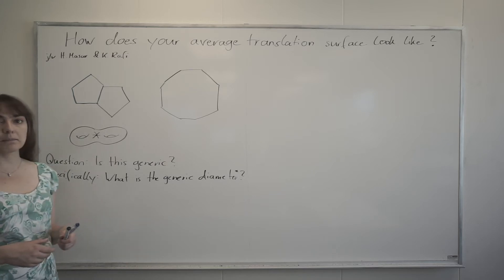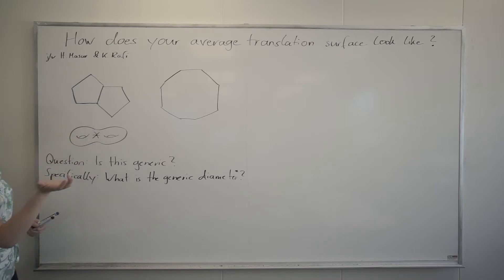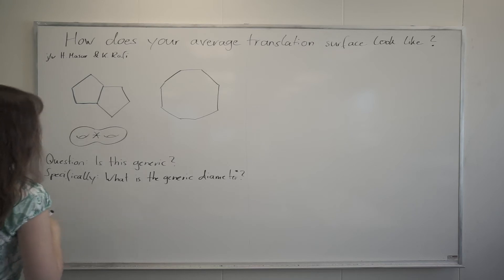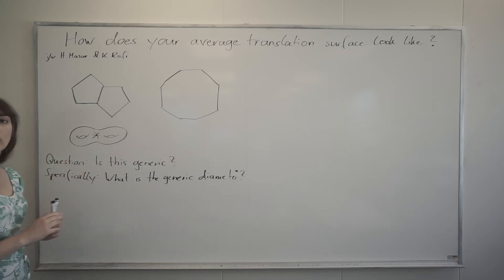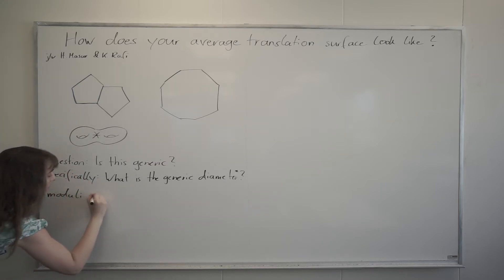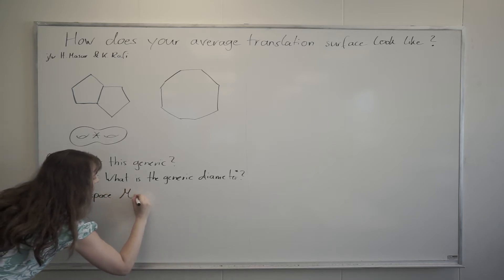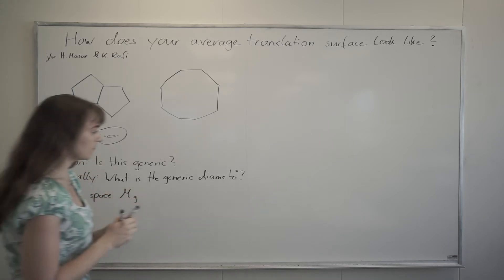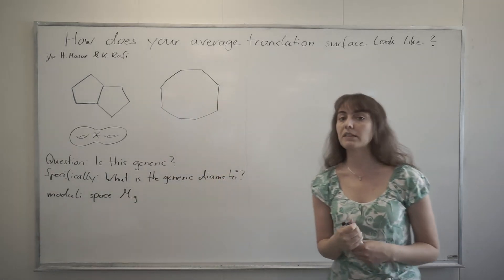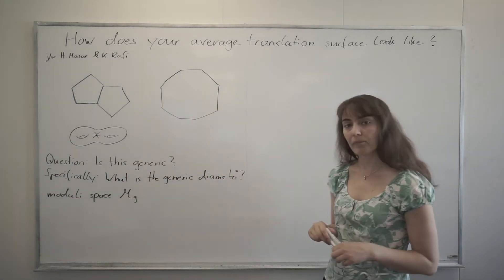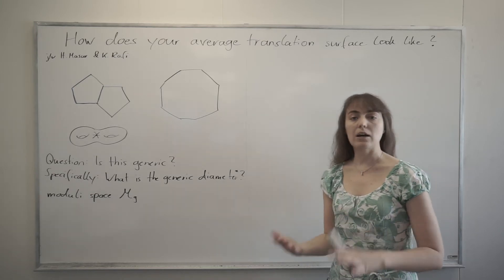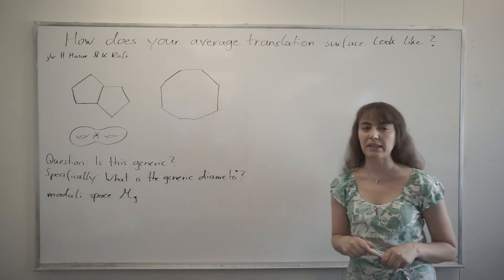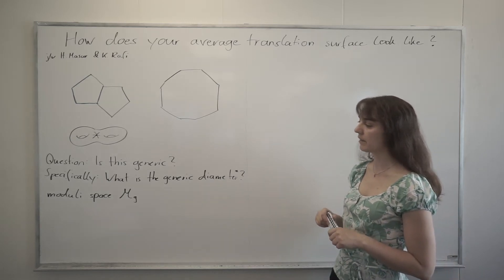I pick randomly a translation surface from a space. Now what is the space that I want to look at? I can look at the space of all translation surfaces that have genus 2, and that's the moduli space Mg. So for example these two here live in the moduli space M2. Now I've described you how to see the moduli space locally as something eight dimensional real dimension.